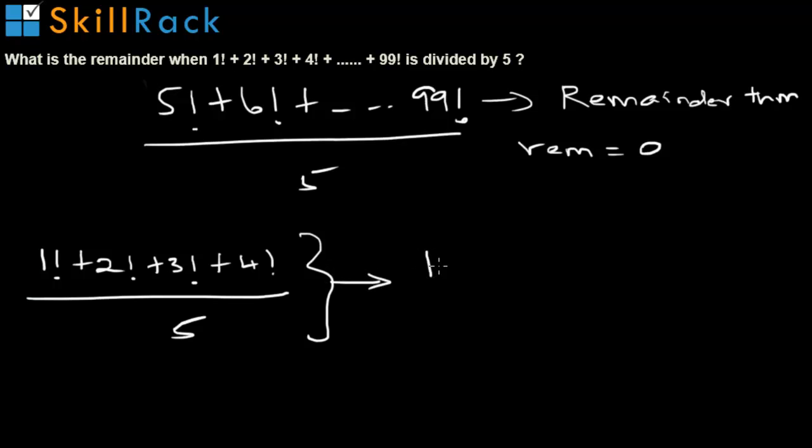This is nothing but 1 plus 2 plus 3 factorial is 6 plus 4 factorial is 24, divided by 5, which is 33 by 5.